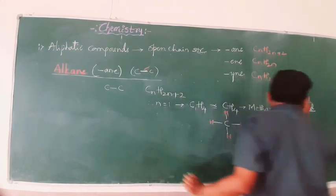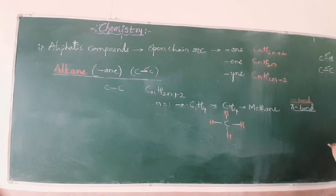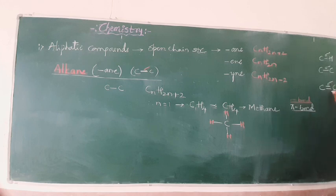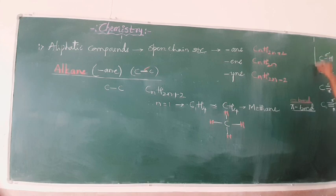Pi bonds are always weak bonds because they just overlap sideways. Sigma bond is strong and pi bond is weak. Single bond — carbon-carbon or carbon-hydrogen — is a sigma bond. Double bond indicates one sigma and one pi bond. Triple bond consists of one sigma and two pi bonds. This is very important.